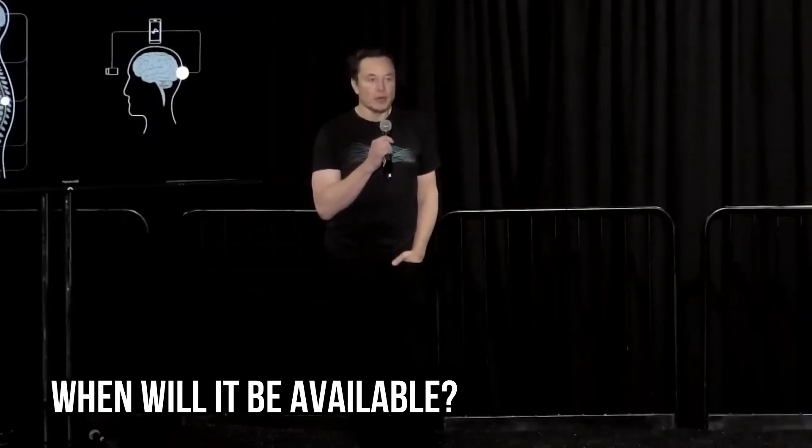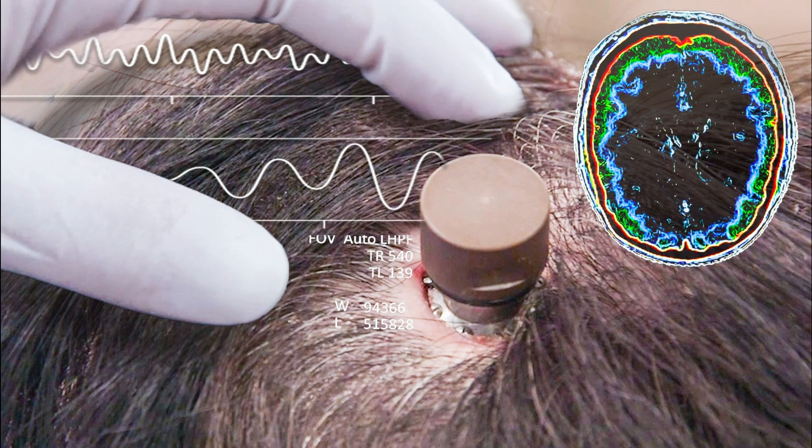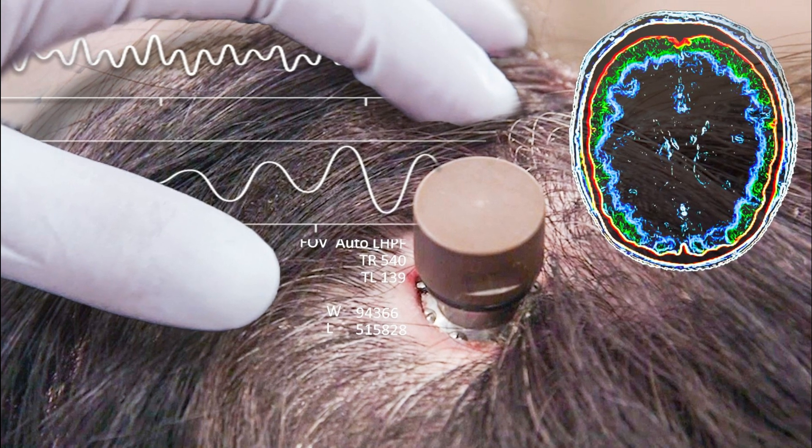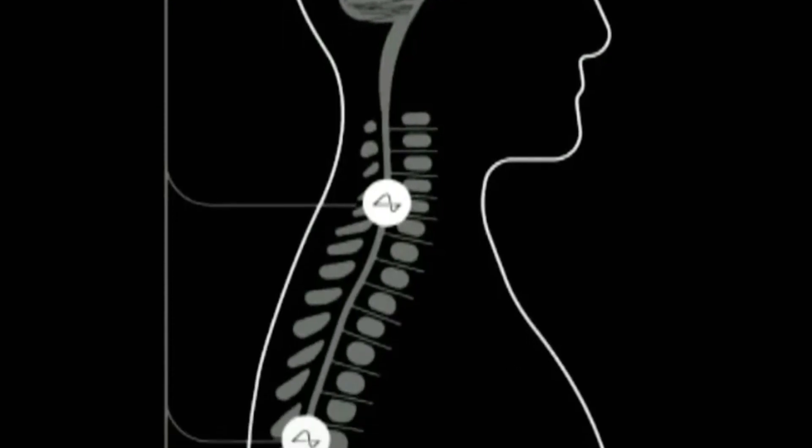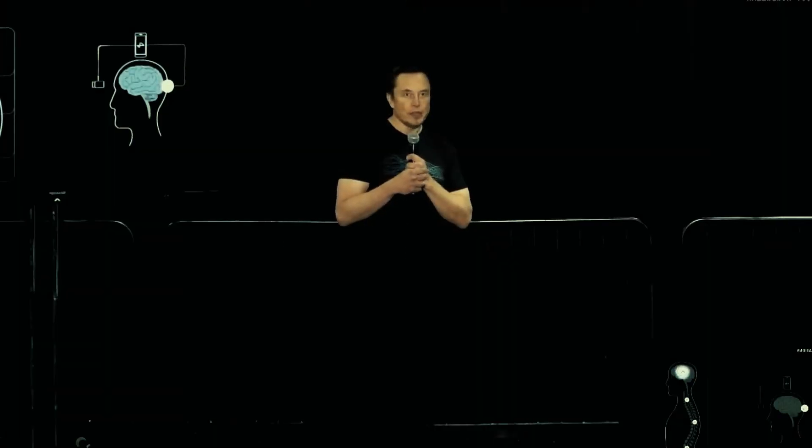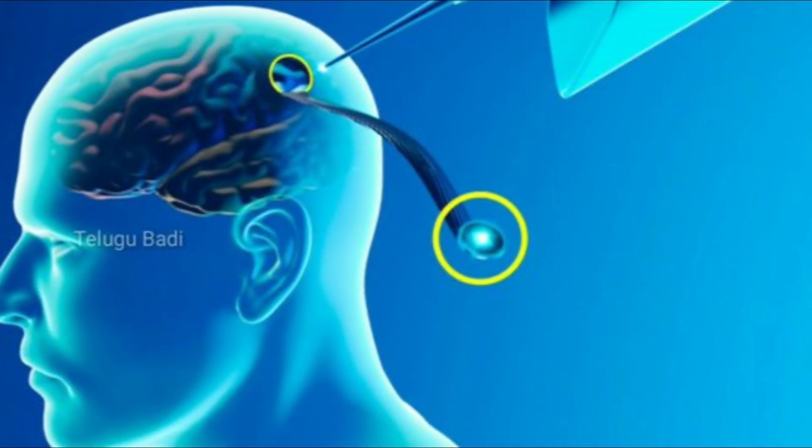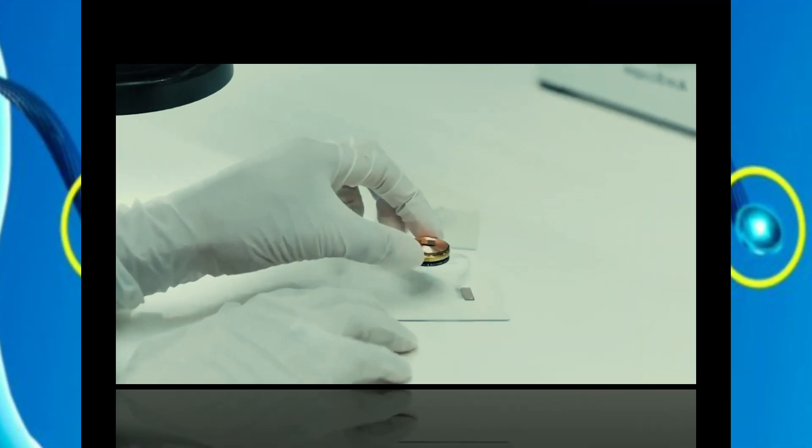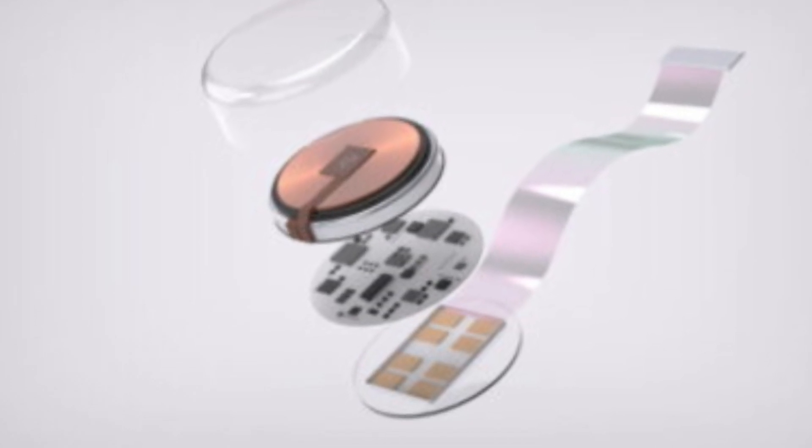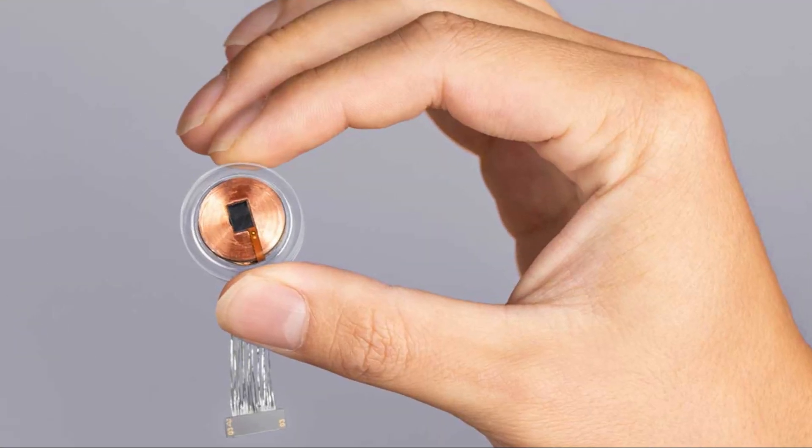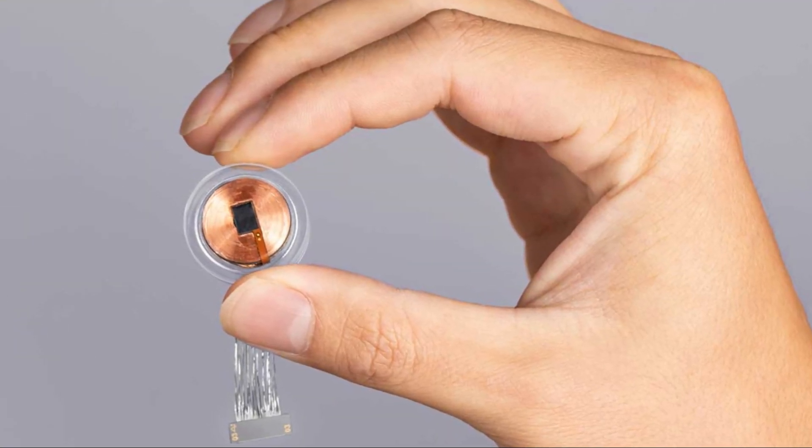When will it be available? The Neuralink technology is still in its early stages, but Elon Musk has promised to bring a working version of the device to market in the near future. The company has not yet provided an exact timeline for when the device will be available, but they are aiming to have a commercial product ready by 2022. Musk has even stated that the development of the device is progressing at an accelerating rate, and that he believes it will be available sooner rather than later.